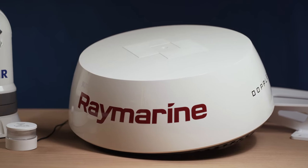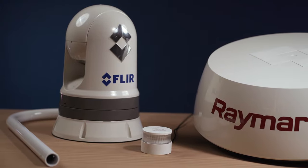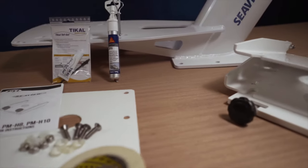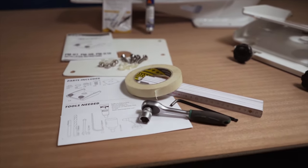Installing a Raymarine Quantum II Doppler radar and a FLIR night vision camera will ensure safe navigation at sea even in bad weather. Both devices together with an anchor light will be fitted to a SeaView device mount.